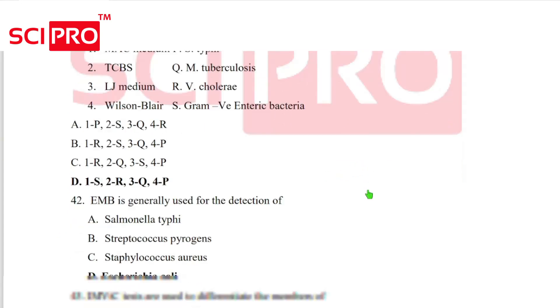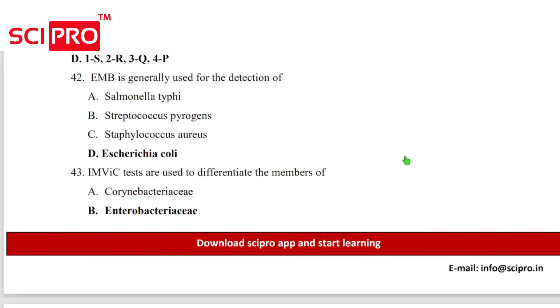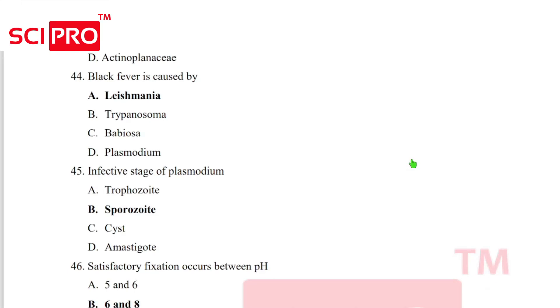Answer is D. Question number 42, EMB is generally used for the detection of Escherichia coli. Question number 43, IMViC test is used to differentiate the members of Enterobacteriaceae. Question number 44, kala-azar is caused by Leishmania. Question number 45, infective stage of Plasmodium sporozoid.